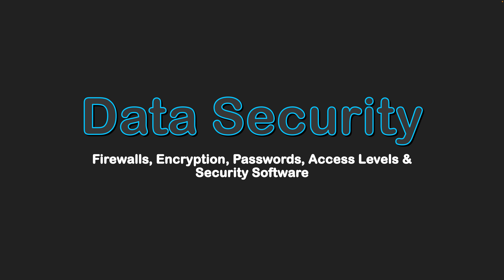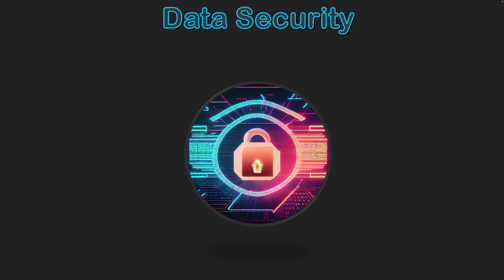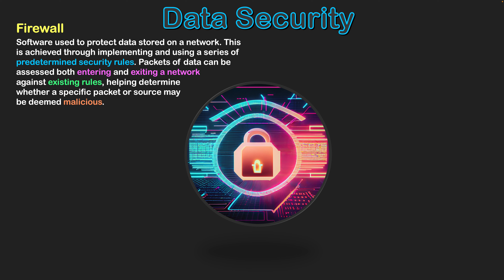Data security: firewalls, encryption, passwords, access levels, and security software. We're going to take a look at a few different types of data security tools that can be used in order to protect and secure different networks that store confidential information and maintain privacy. We'll look at some of the tools, though there are more which may be covered in a future video. Firstly, we'll take a look at a firewall.